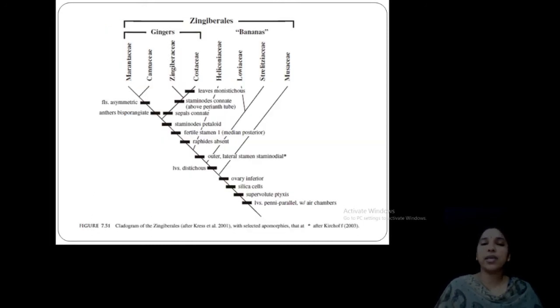Before that, I am here representing the latest version, a cladogram proposed by the Kress and their team, the scientist Kress and their team in 2001, to display the elite members coming under Zingiberales.